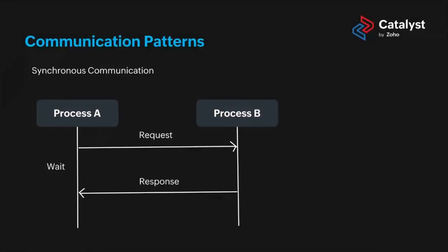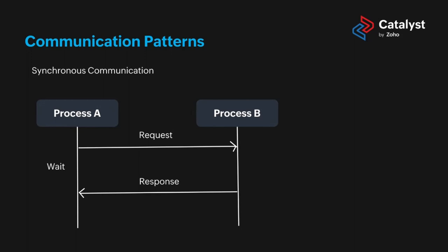Let's take two processes: Process A and Process B. Process A sends a request to Process B. If Process A waits for the response, that's synchronous communication. If Process A requests some information, continues with other operations, and then receives the response, that's asynchronous communication. In synchronous communication we wait until we get the response; in asynchronous communication we continue with the next process.